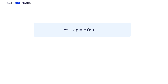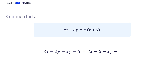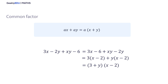Now, ax plus ay is equal to a times x plus y. This expression, more than a formula, is the distributive property of multiplication, and it is called the common factor method of factorization. For example, 3x minus 2y plus xy minus 6 can be rewritten as 3 times x minus 6, plus xy minus 2y. The first two terms can be divided by 3, and xy minus 2y can be divided by y. Rewriting using a common factor, we find x minus 2 as a new common factor, and using the distributive property we obtain 3 plus y, multiplying x minus 2.